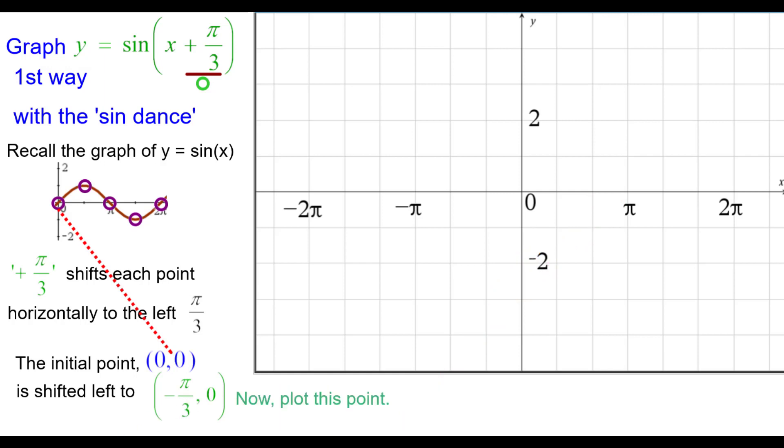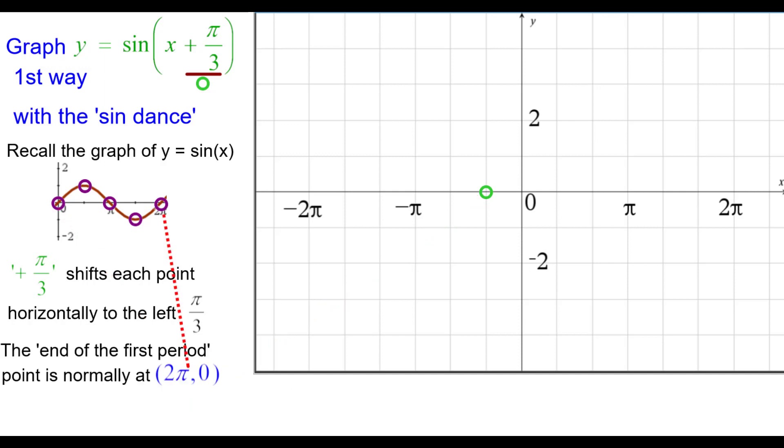So now we'll go ahead and plot negative pi over 3, 0 and there it is on the x axis. At the end of the period it's normally at 2 pi, 0 but remember every point is being shifted to the left pi over 3 so it's going to come back to 5 pi over 3, 0.